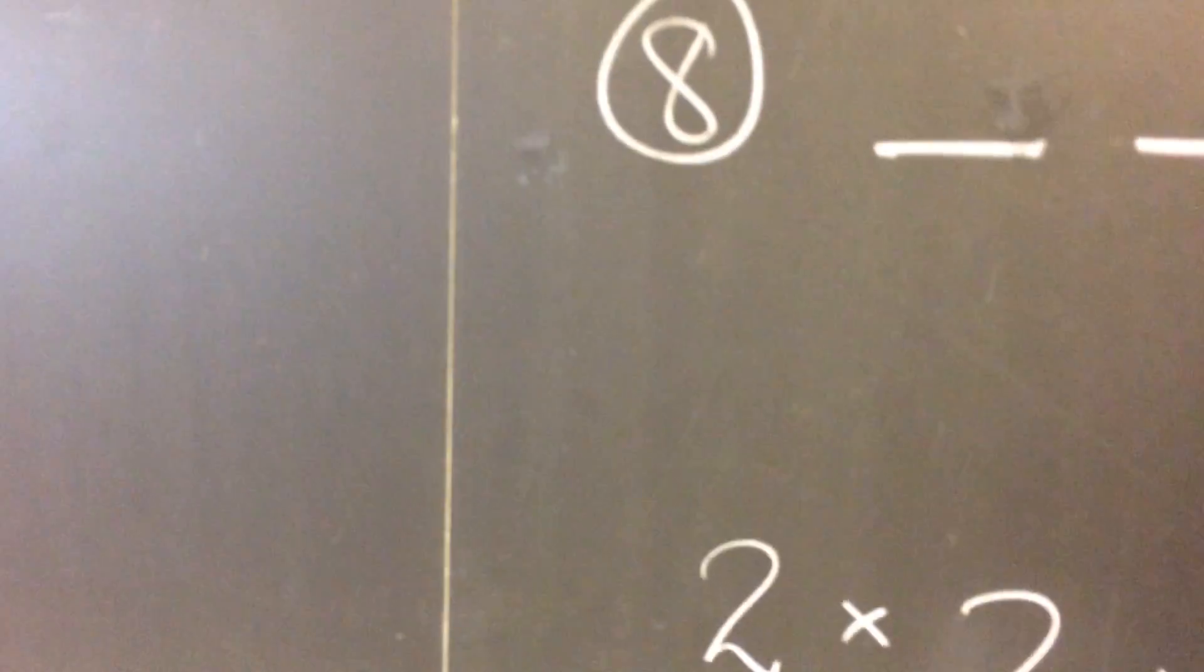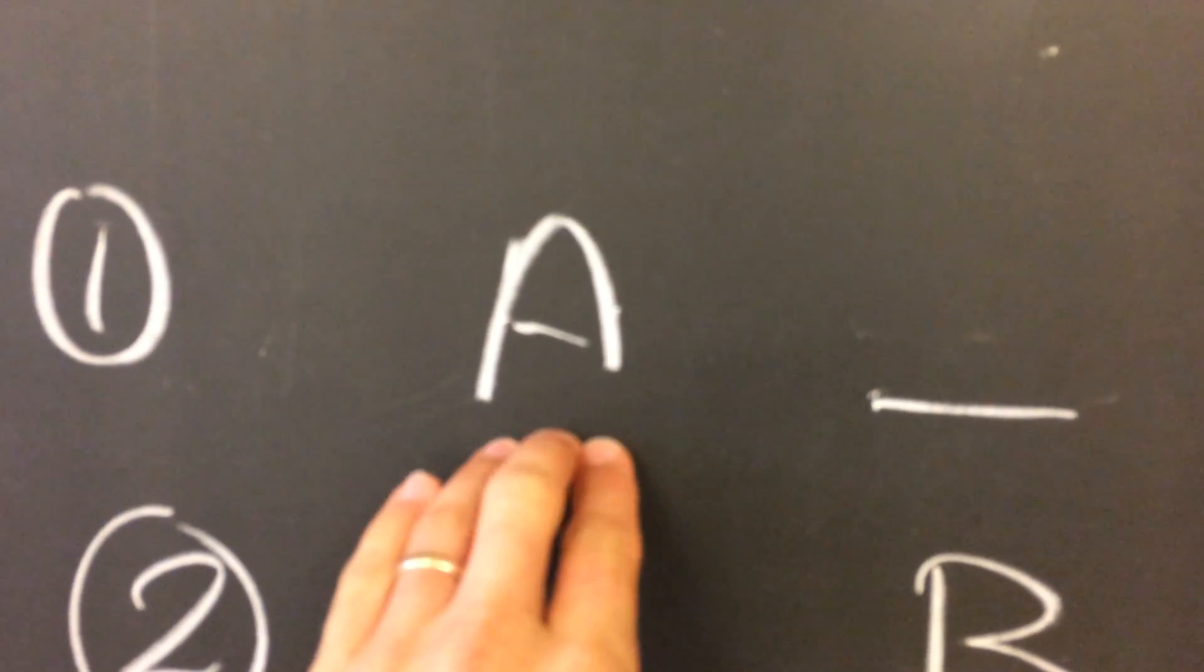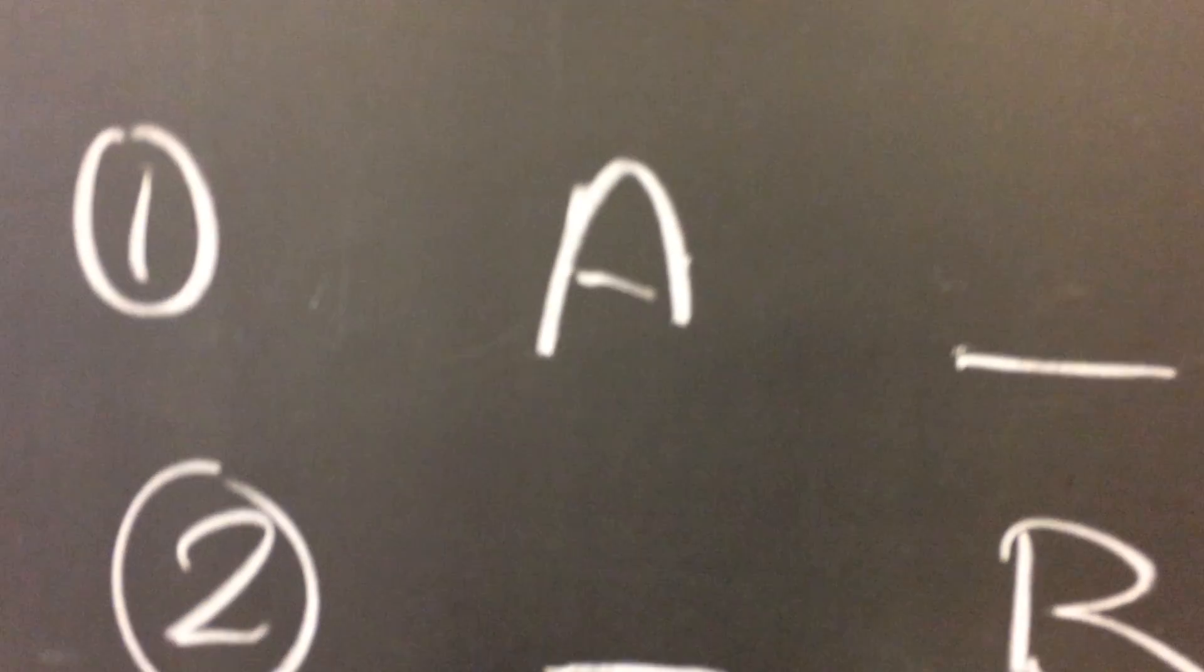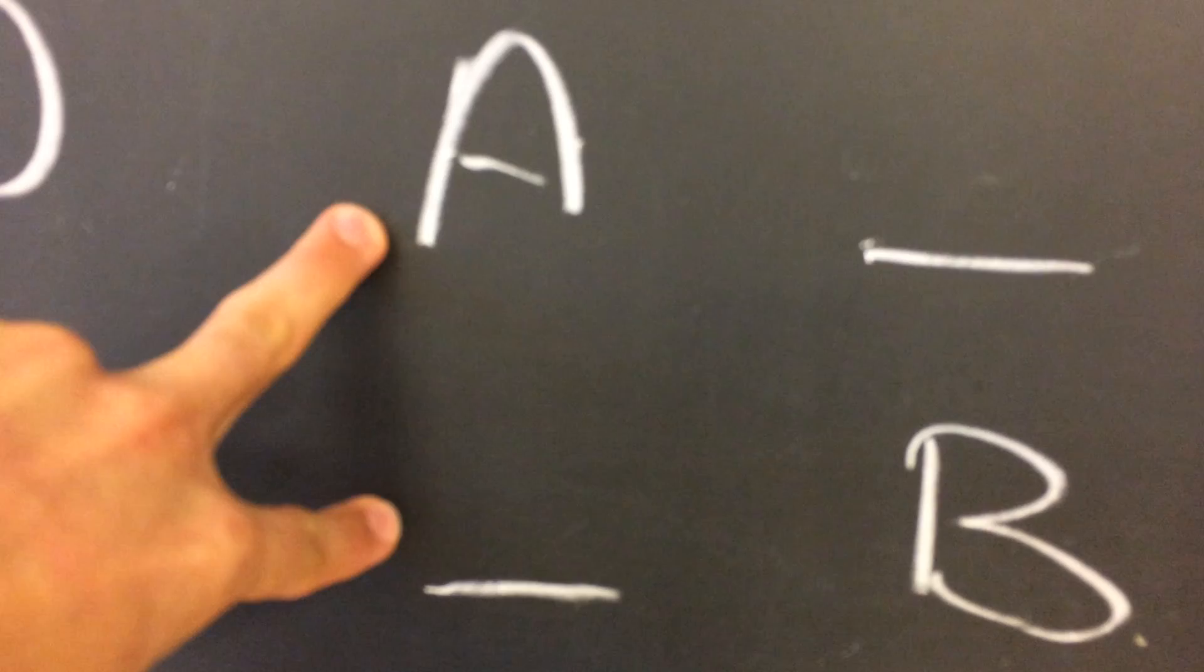So let's generalize this a little bit, instead of thinking about it as all of these separate cases, instead we could say, well, do I pick the A or not? So yes, I choose A, or no, I do not include A, so I have a choice to make for the letter A.